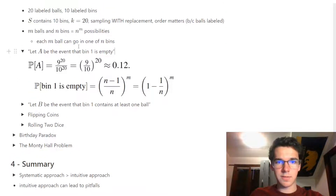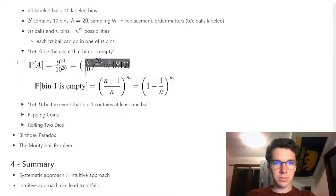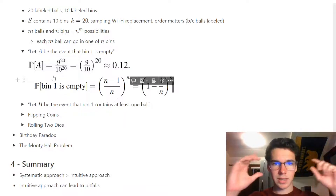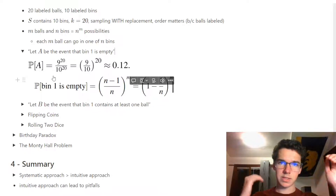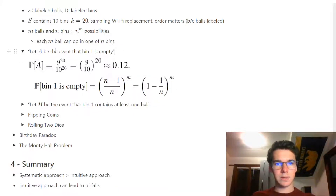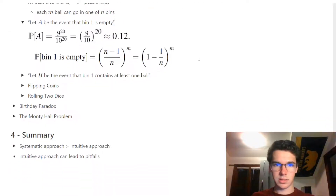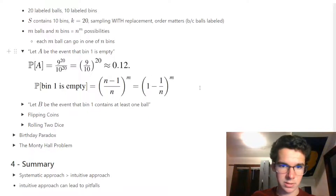Let A be the event that bin one is empty. The probability is computed as event size divided by sample size. If bin one is empty, we only have 9 bins to choose from, so we disperse 20 balls among 9 bins — giving a probability of 9^20 / 10^20, which simplifies to (9/10)^20.